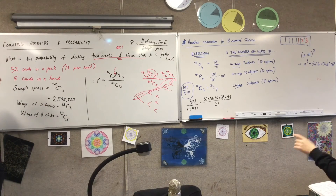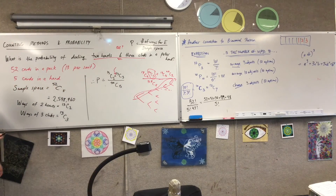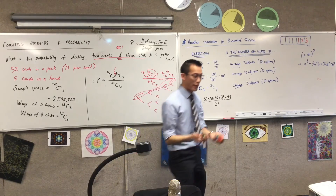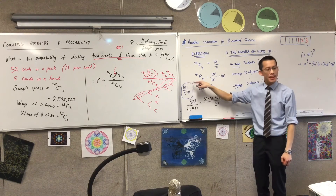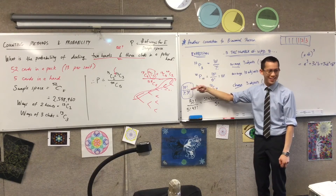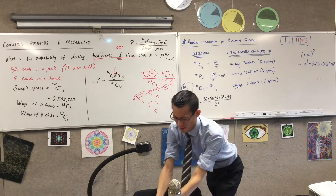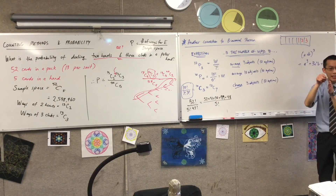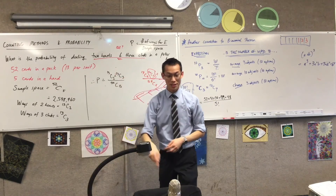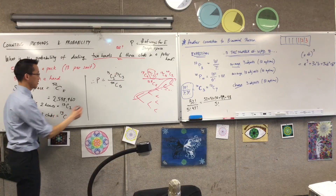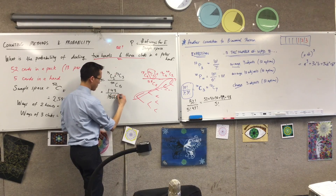Also, 13C3 already takes care of the fact that by choosing one card out you eliminate one choice — because it's 10, then 9, then 8, then 7, not 10 × 10 × 10. Everything is essentially without replacement when dealing with factorials — they get smaller and smaller because you have fewer options as you progress. So the final numerator is 13C2 × 13C3, which is a really big number — 16,660.